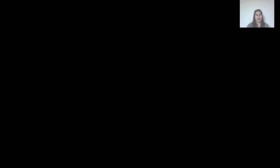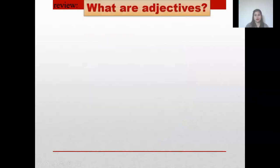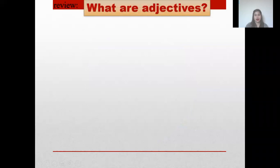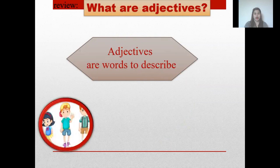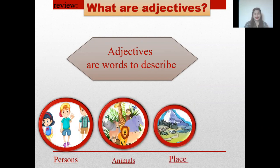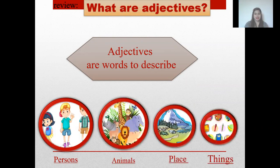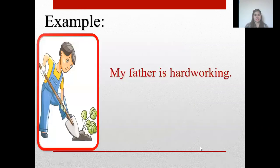Okay, let's go to our lessons. Let us review our previous lesson. What are adjectives? Adjectives are words to describe persons, animals, places, and things. For example, look at the picture — my father is hard-working.